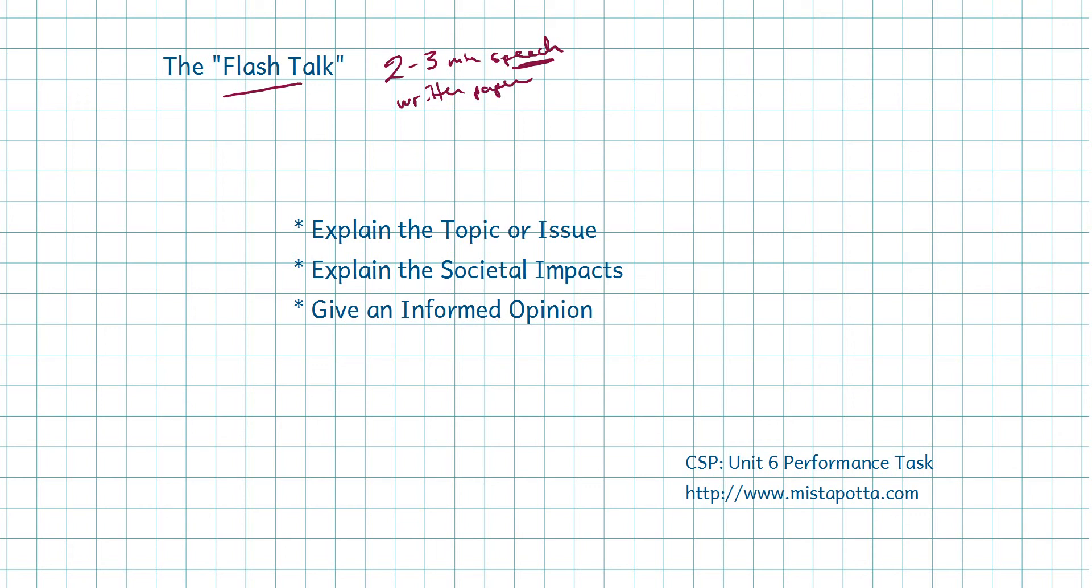But keep in mind that there are three things that you need to do. You need to make sure that you explain the topic or issue that you're talking about. The topics we're talking about, net neutrality, internet censorship, they're very broad topics. And so what you need to do is kind of focus in on one topic. You need to give the societal impacts because people don't care about the thing as a whole. They want to know how it affects them. And you need to make sure that you give an informed opinion. That's the whole idea behind the research.